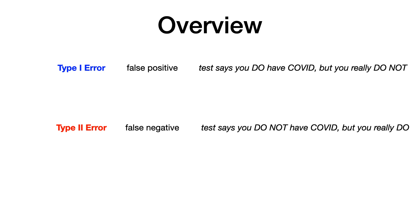We talk about these types of errors as being probabilities — the question statistically is what is the probability that there is this error. We can refer to these as type 1 error or type 2 error, but you also might see the terms alpha or beta probability. Type 1 error, while it is a false positive having to do with the incorrect use of the null hypothesis, we can also say that it is the probability of alpha error — it's alpha probability.